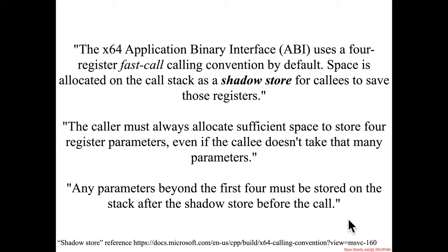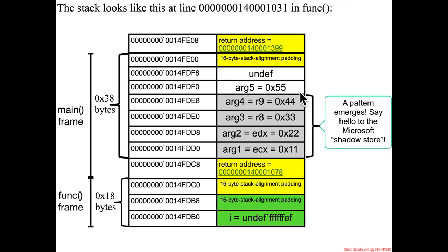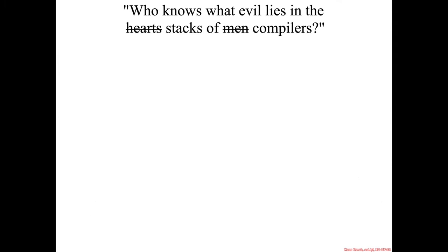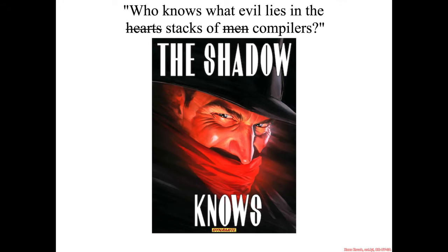So that is why we see hex 55 being pushed onto the stack in such a way that it ultimately shows up here above the shadow store. So who knows what evil lies in the stacks of compilers? The shadow knows.